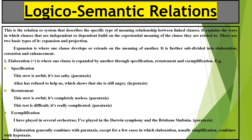Moving on to logico-semantic relation. This is the relation or system that describes the specific type of meaning relationship. In taxis we explained what type of dependency or interdependency relationship exists between two clauses. But here in logico-semantic relations, we explain the specific type of meaning relationships — the meaning relationship present between the clauses. It explains the ways in which clauses that are independent or dependent build on the experiential meaning of the clause. There are two basic types: expansion and projection, each further subdivided.